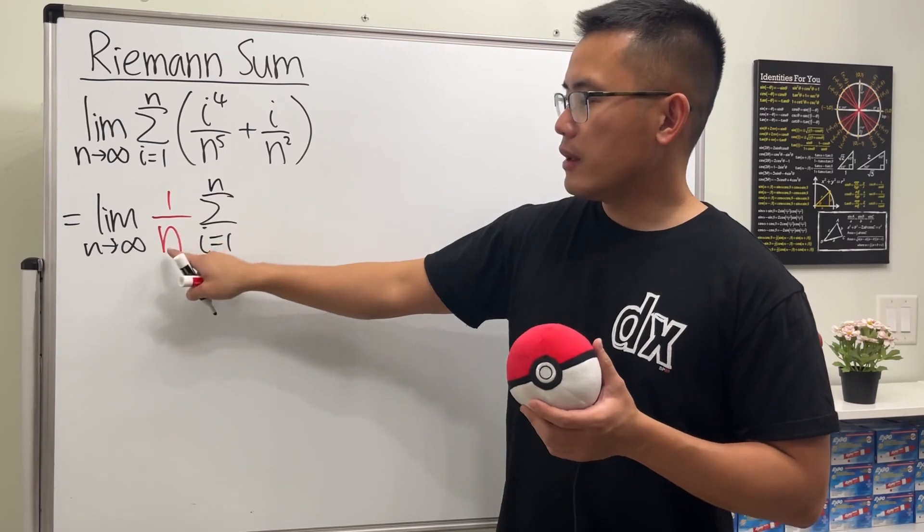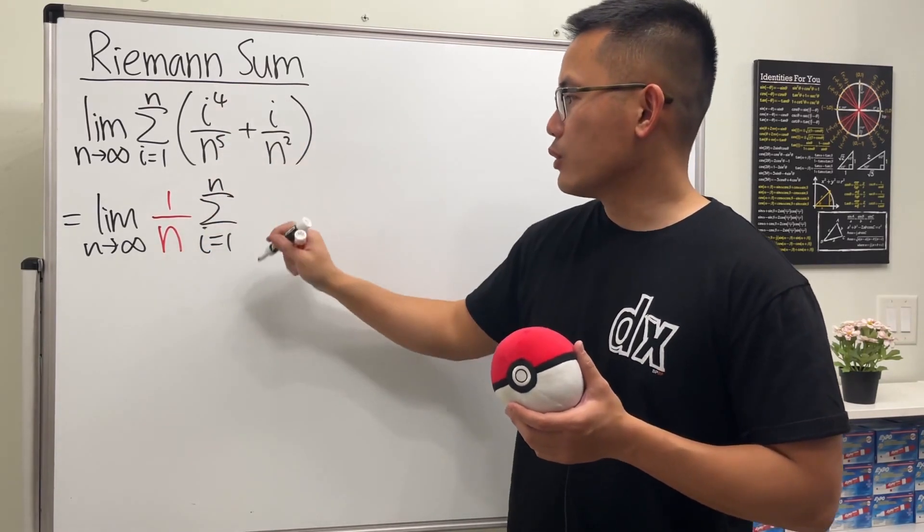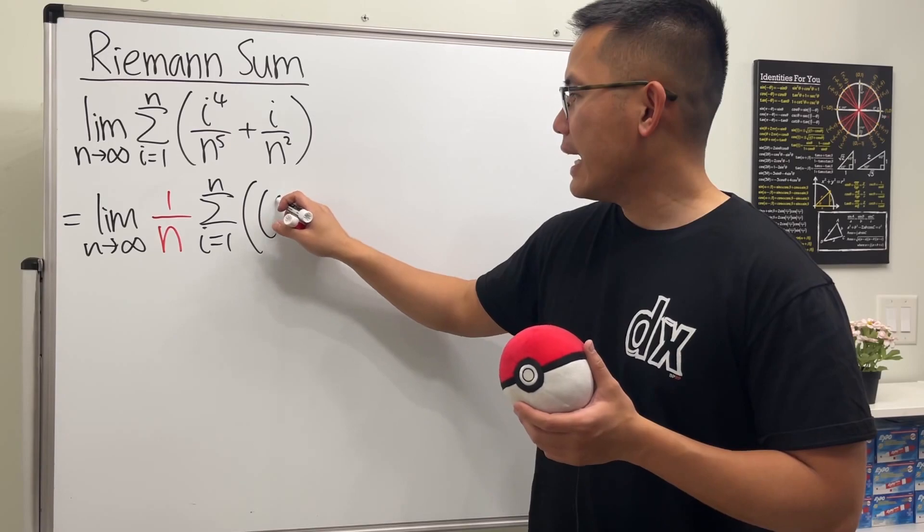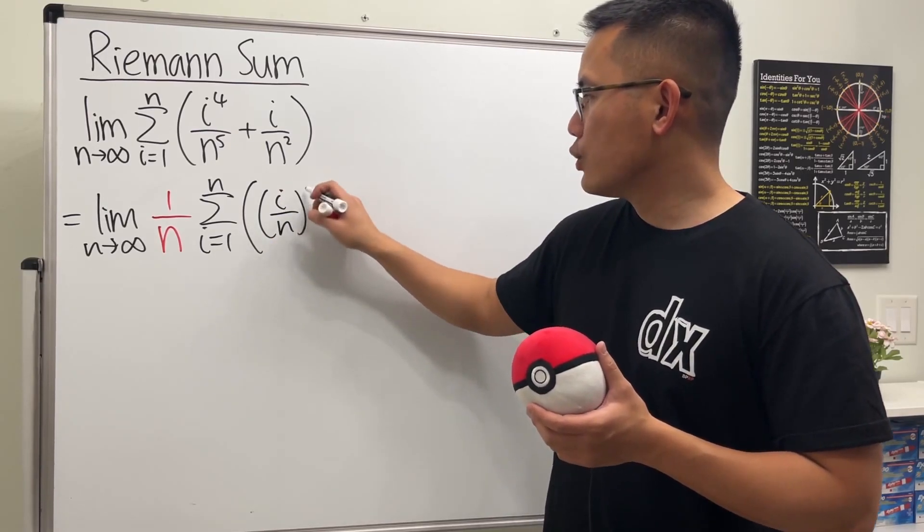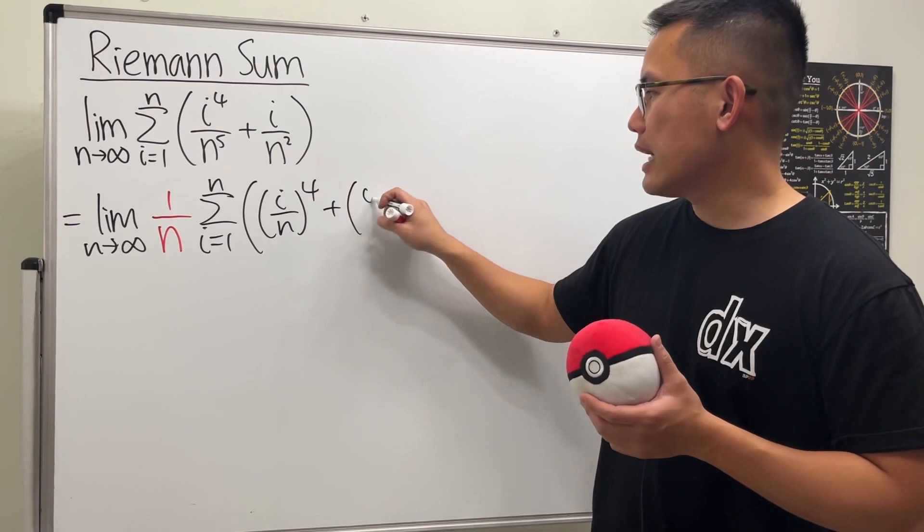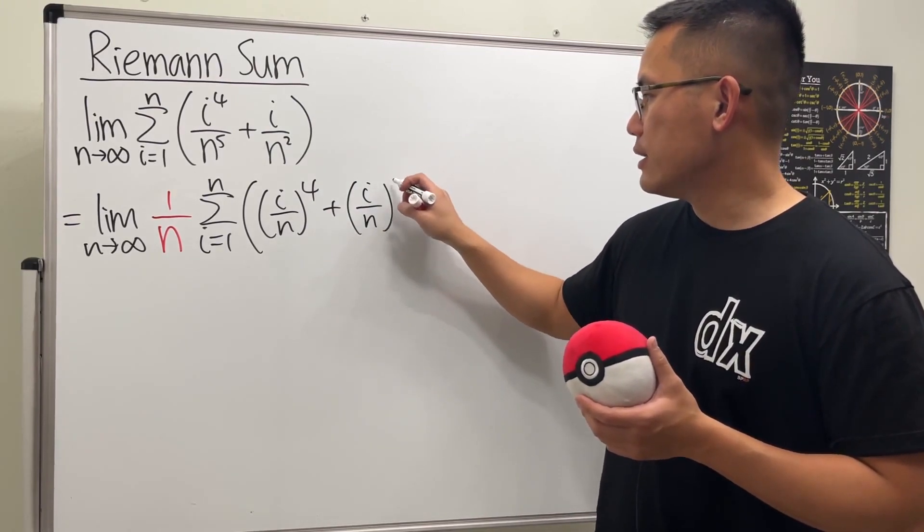And now this right here will just be n to the fourth, and I'm just going to write that as (i over n) to the fourth. And then likewise here, I'll just put it as i over n, and that will be to the first power.